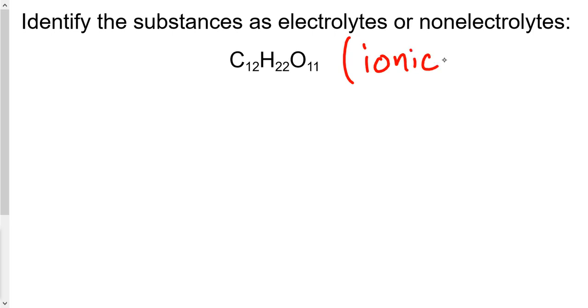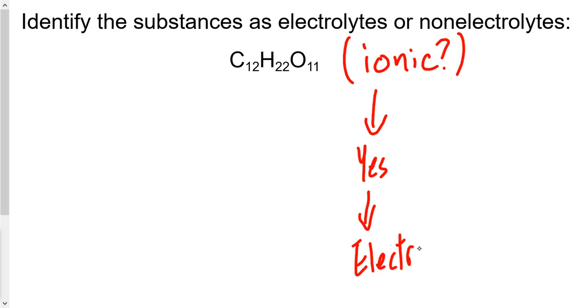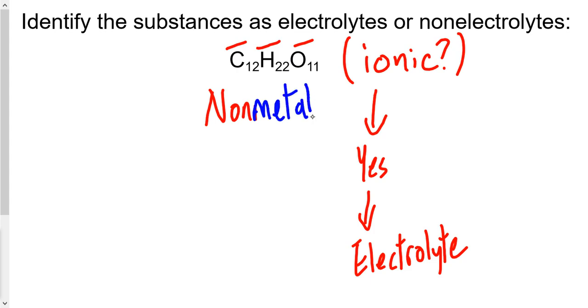Let's practice one more. The first question is: is this substance ionic? Electrolytes can be acids and bases as well, so we have to be slightly careful. Is it ionic? If the answer is yes, it would be an electrolyte. For C₁₂H₂₂O₁₁, carbon, hydrogen, and oxygen are all non-metals. When we have all non-metals, the type of substance formed is molecular or covalent. So it is not ionic — the answer is no.